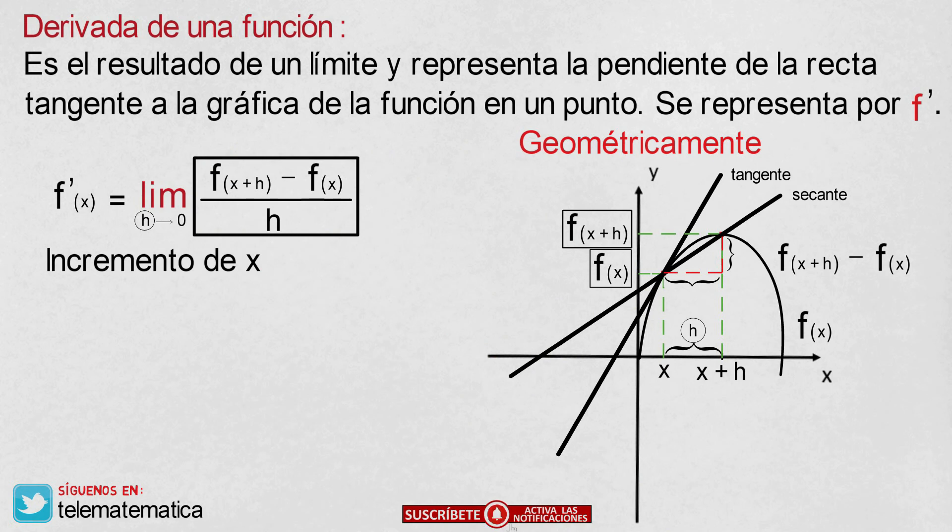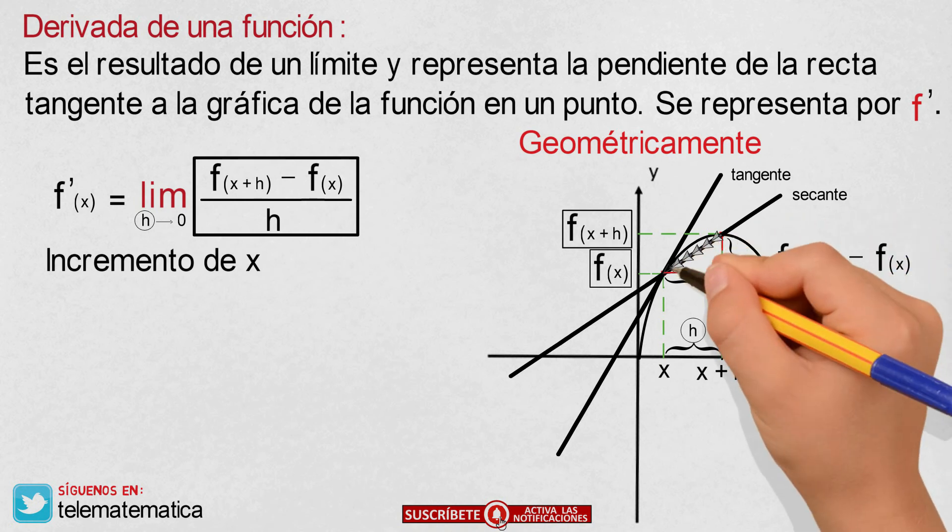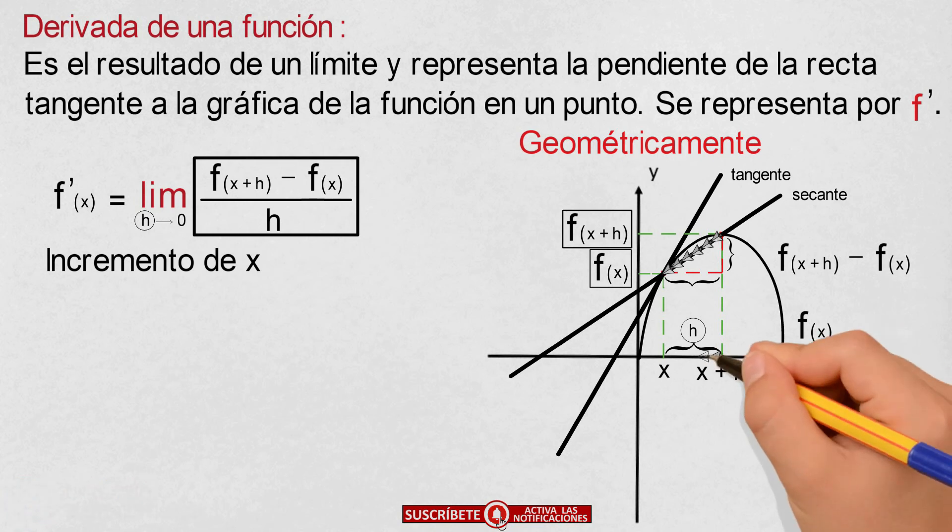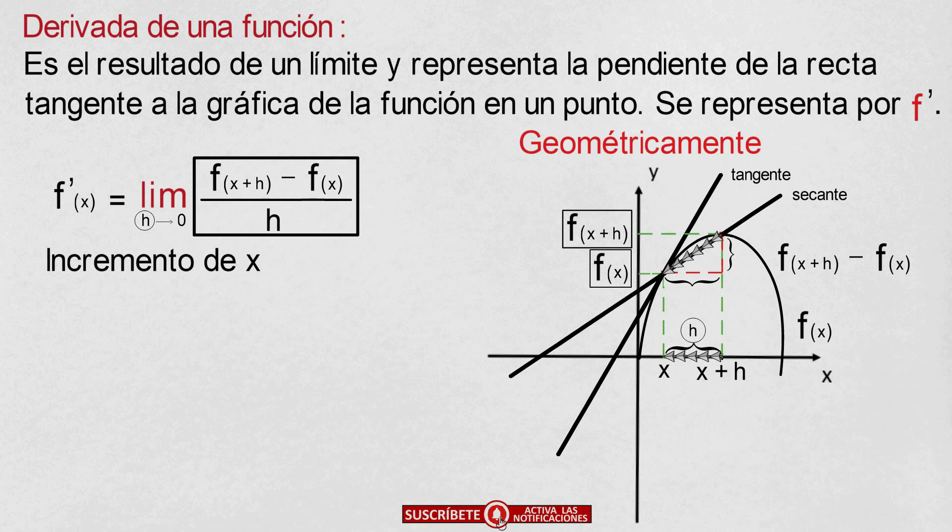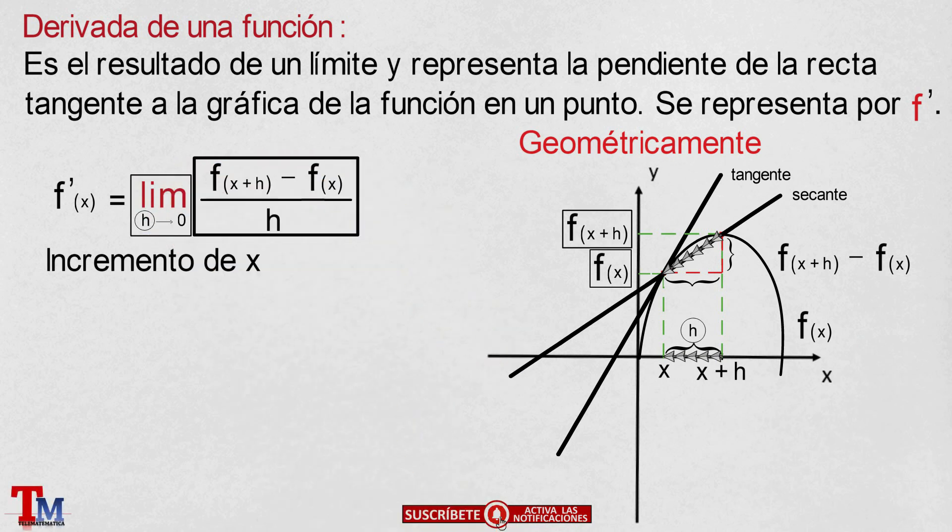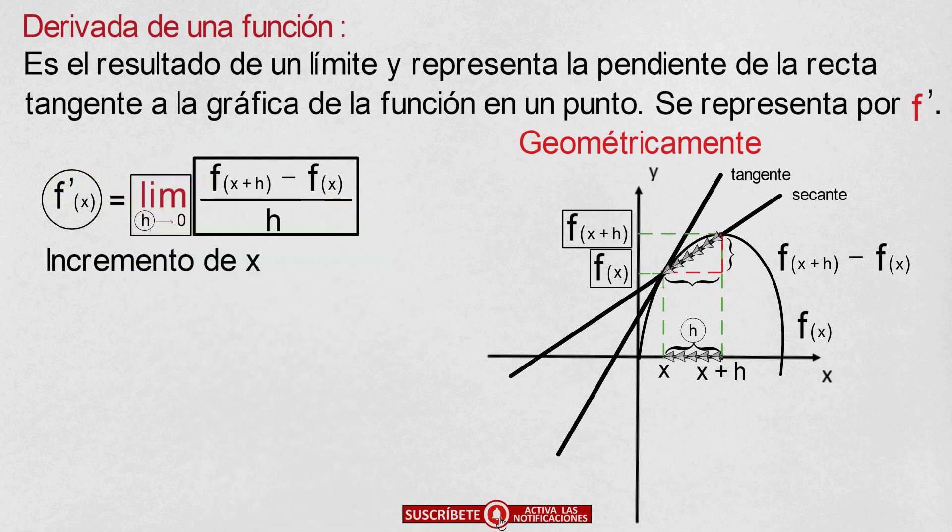Now, as the second point approaches the first, the secant line also approaches the tangent line, which means that the increment h is becoming smaller. In the limit, the secant line will coincide with the tangent, and this is what is called the derivative of a function: the slope of the tangent line at one point.